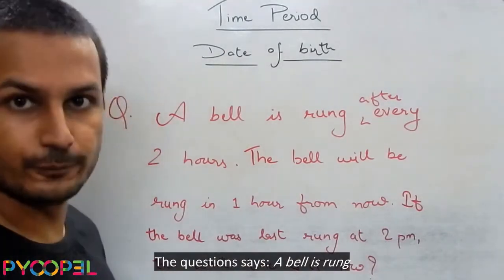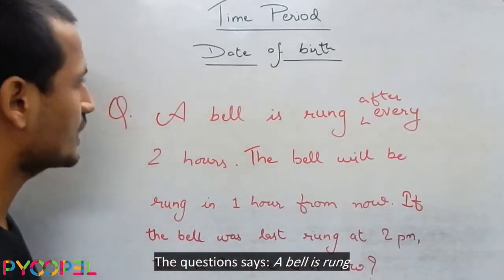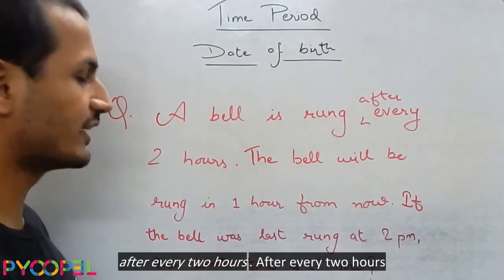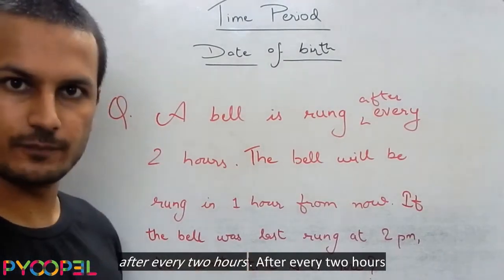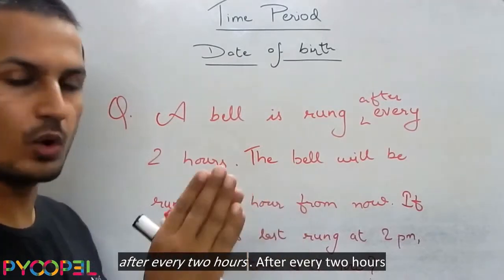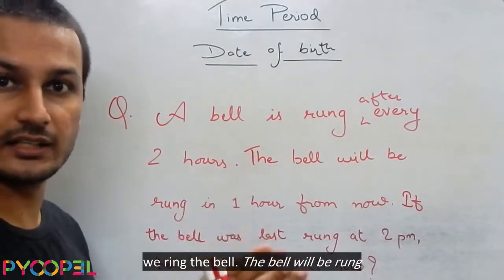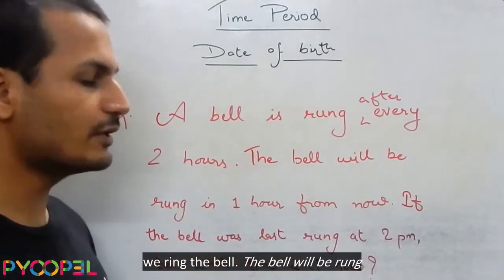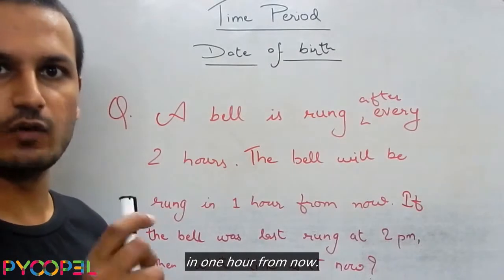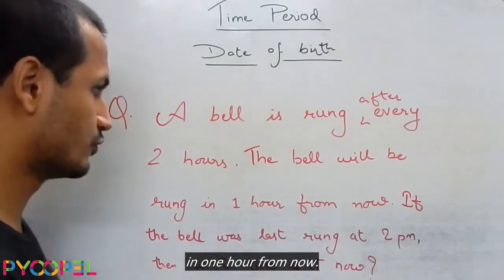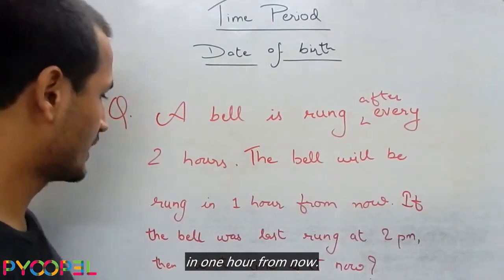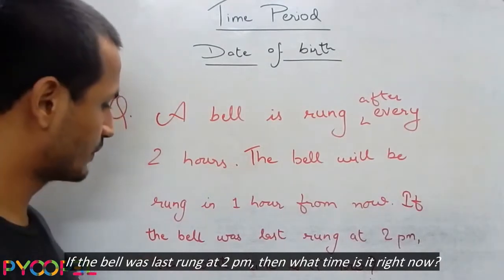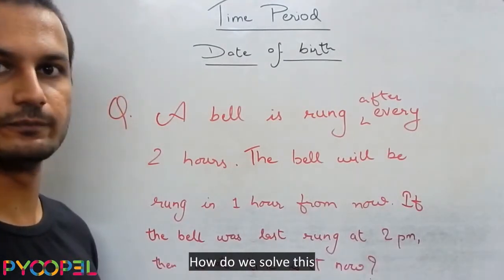So I'll read out the question. A bell is rung after every 2 hours. The bell will be rung in 1 hour from now. If the bell was last rung at 2 pm, then what time is it right now?